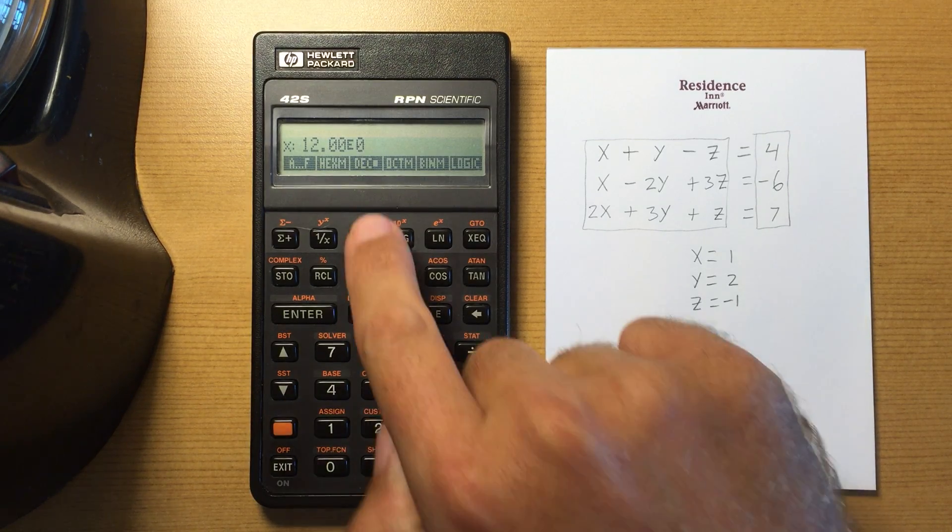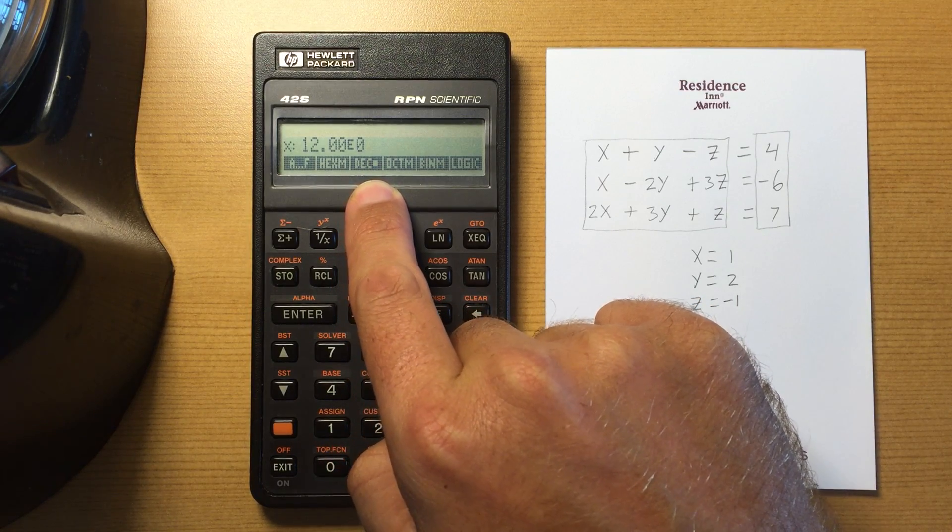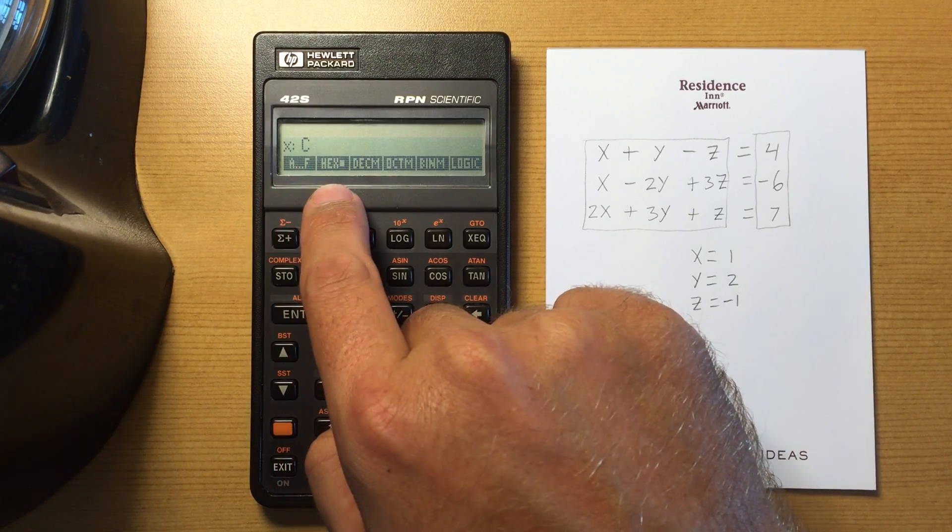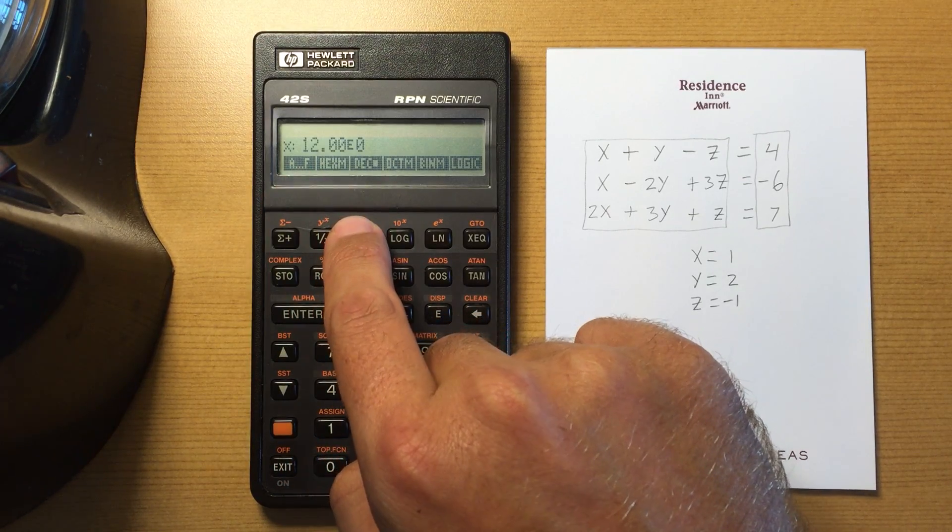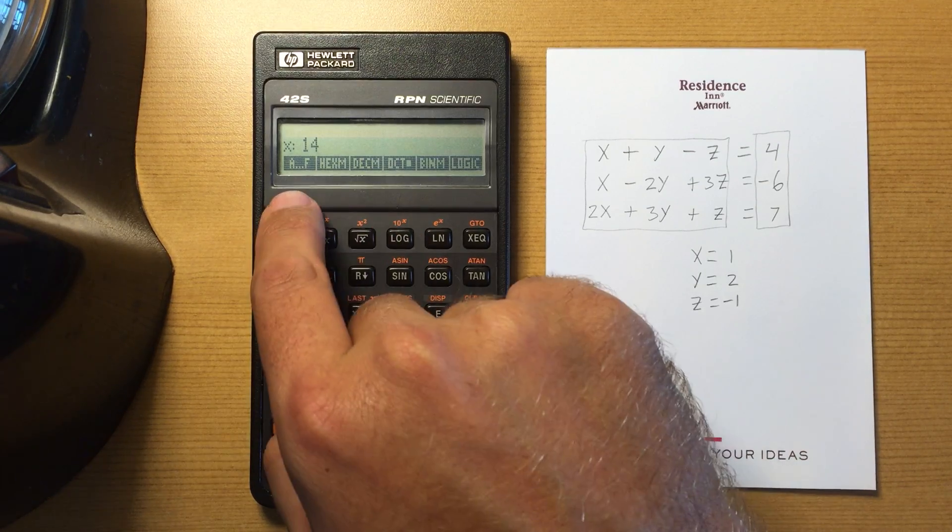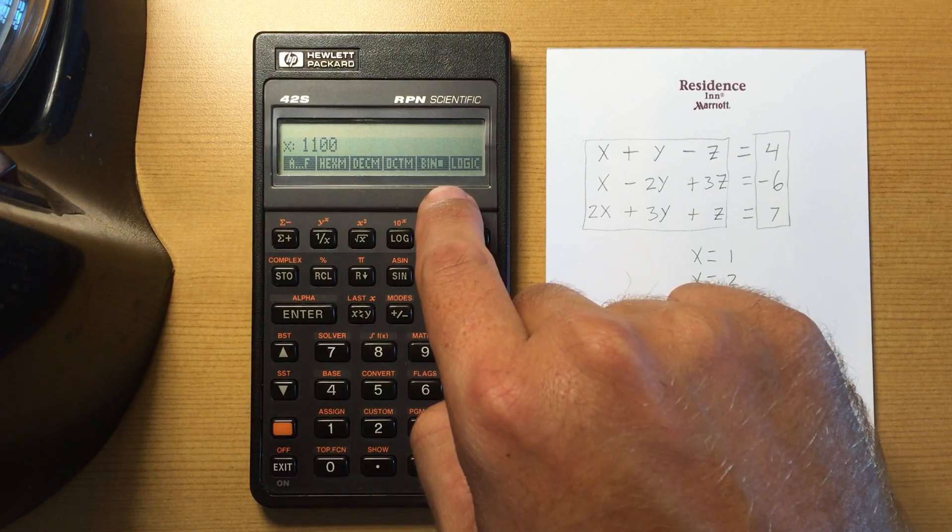I go to base conversion. Right now it's in decimal mode. If I go to hexadecimal mode, it will switch that number to C. 12 is C in hexadecimal, or it's 14 in octal, or 1100 in binary.